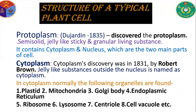In the cytoplasm, the following organelles are found: plastids, mitochondria, Golgi body, cytoplasmic endoplasmic reticulum, ribosome, lysosome, centriole, and cell vacuole, etc.